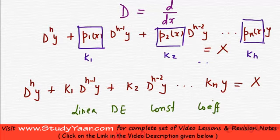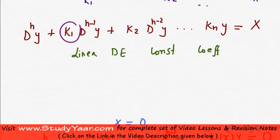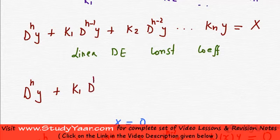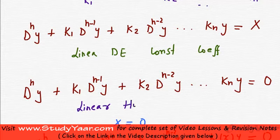A linear homogeneous DE with constant coefficients is simply an equation in which the right-hand side is 0 and all the coefficients are constants. So the equation takes the form: D^n y plus k1 D^(n-1) y plus k2 D^(n-2) y, and so on, plus kn times y equals 0. This is a linear homogeneous differential equation with constant coefficients.